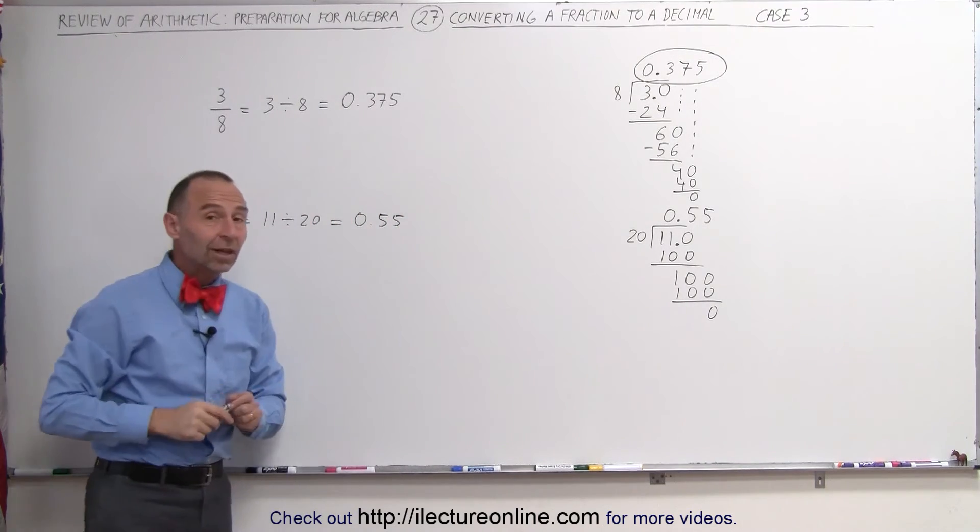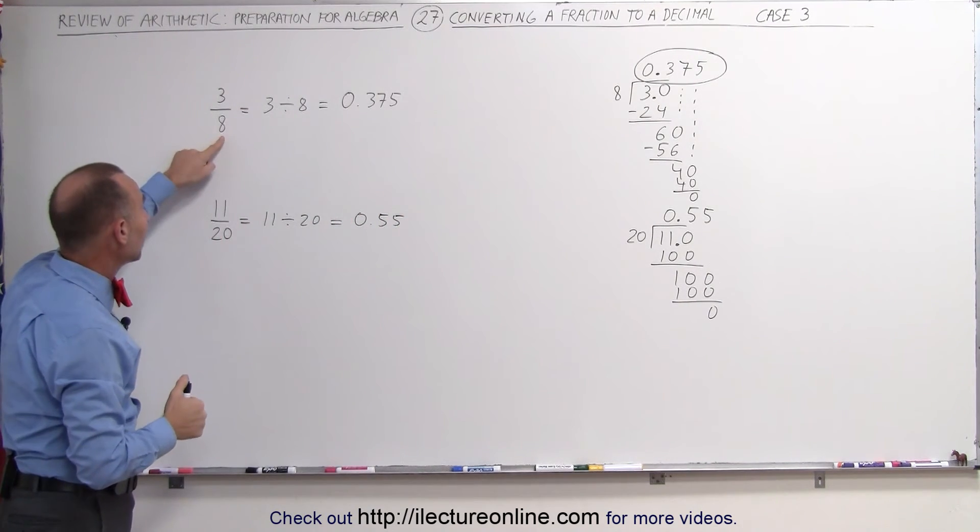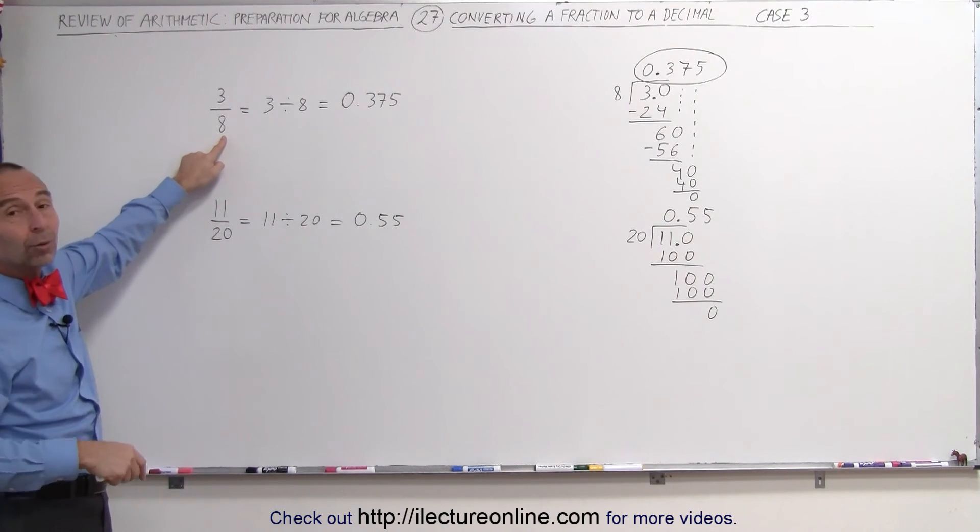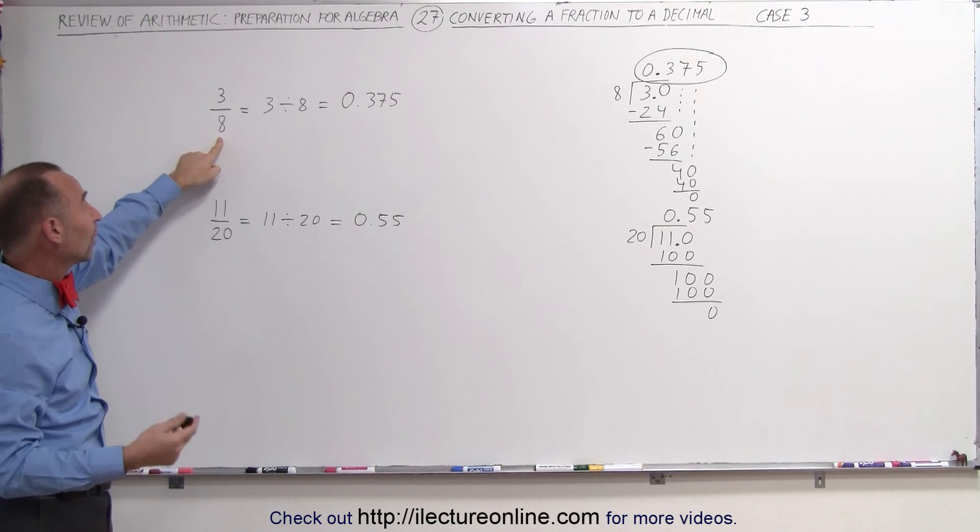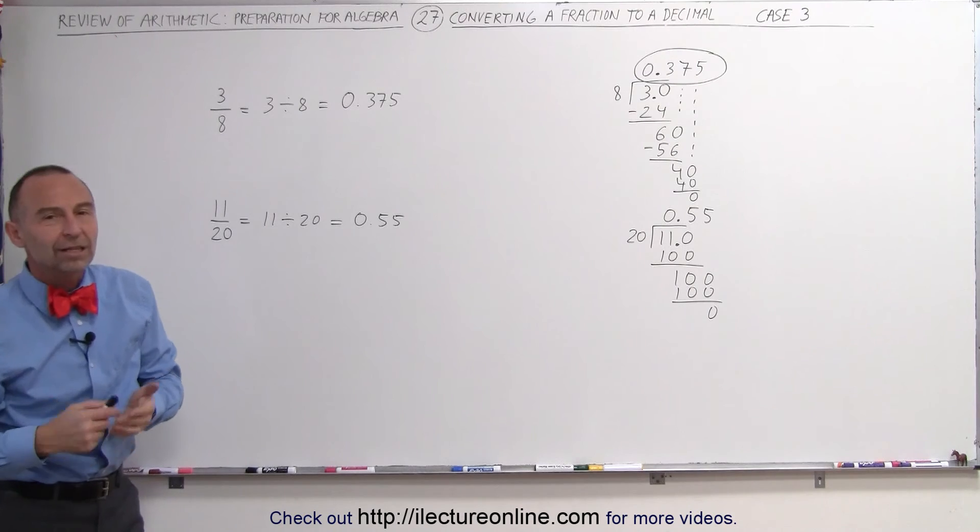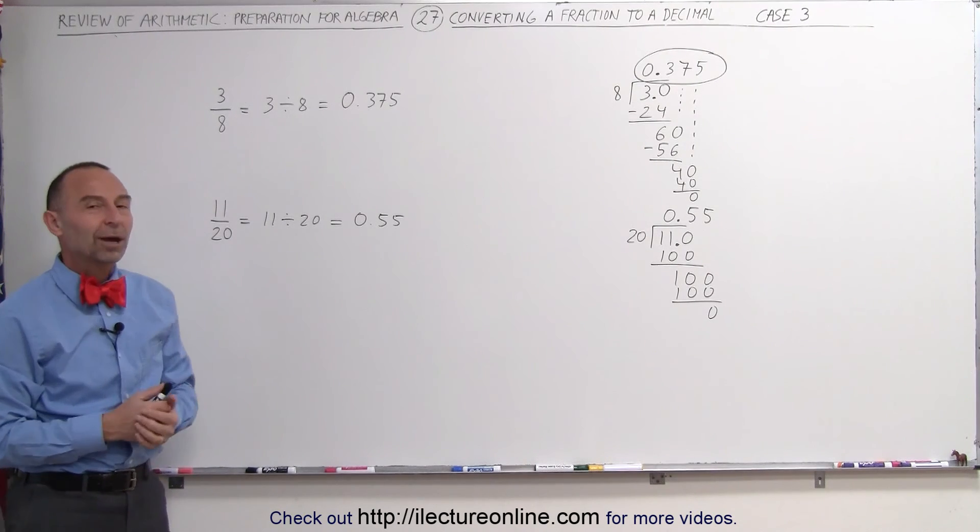So when all else fails and you can't see that the denominator fits evenly into 10, 100, or 1,000, and maybe this is not quite clear that 8 does fit into 1,000 evenly, you simply go ahead and do a longhand division and you then turn the fraction into a decimal that way.